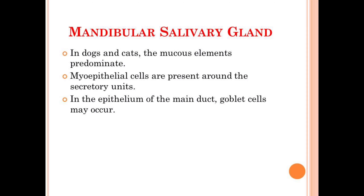Another characteristic of the mandibular salivary gland, which is species-specific, is that in the case of dogs and cats, the mucus element will predominate over the serous one. Myoepithelial cells are present around the different secretory units and help in secretion. Another important characteristic is that in the case of the main duct, the epithelium lining consists of goblet cells which secrete mucus. The presence of goblet cells in the main duct helps in identification of whether the duct is mandibular, parotid, or any other type.